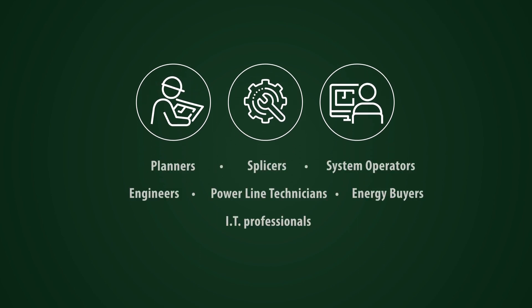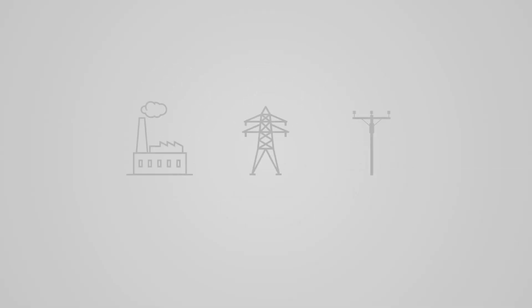Central Hudson's network is designed, maintained, and operated by professionals representing departments across the company. Broadly speaking, the electric delivery system can be broken down into three parts—generation, transmission, and distribution.